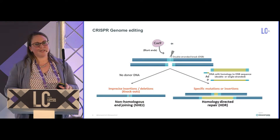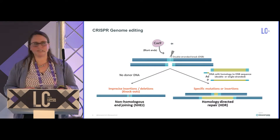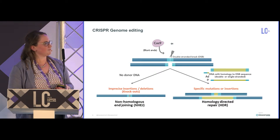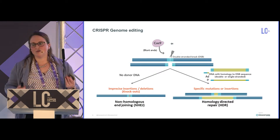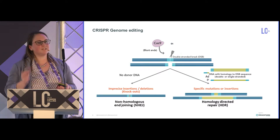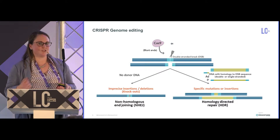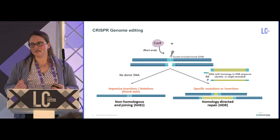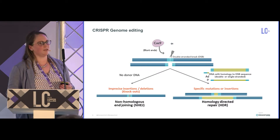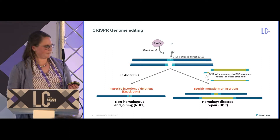If you deliver these reagents with a donor DNA — either double-stranded or single-stranded — containing homology to where you've created the double-stranded break, you can create specific insertions or point mutations in your genomic DNA using the homology-directed repair, or HDR, pathway.